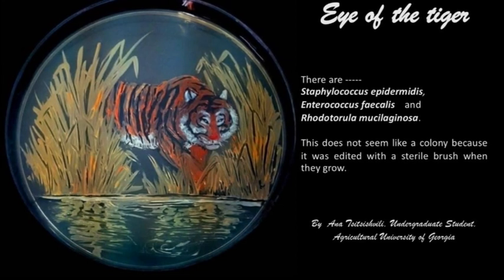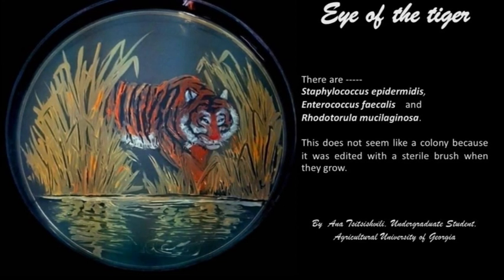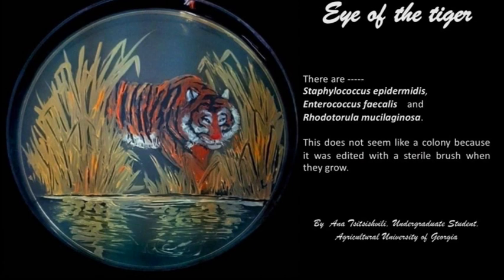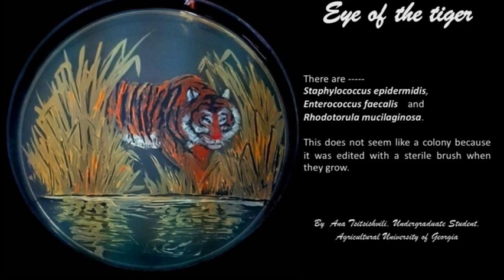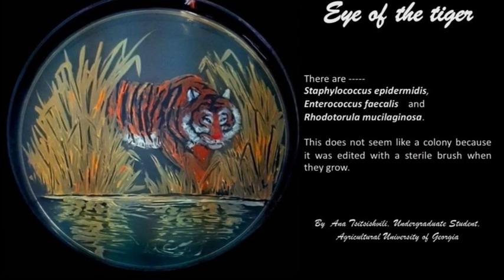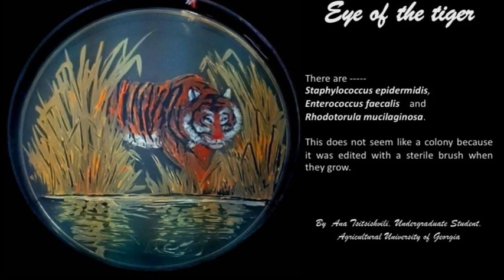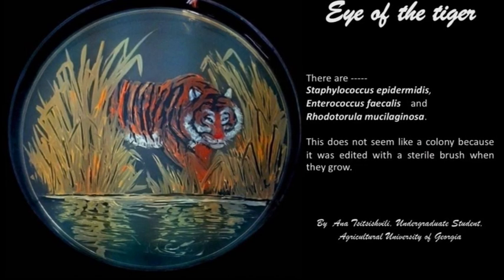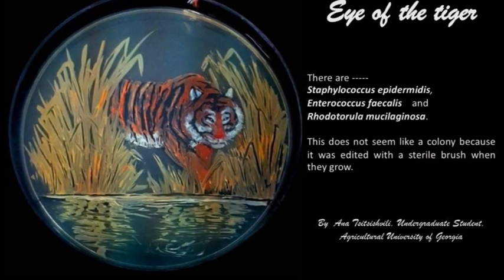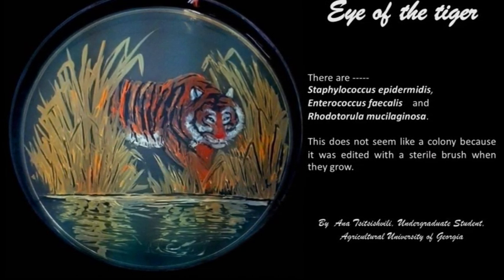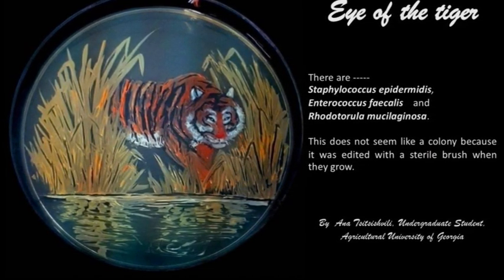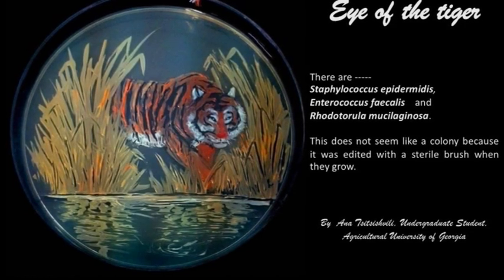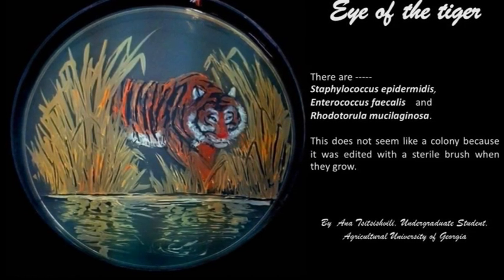I Was a Tiger. In this painting, Staphylococcus epidermidis, Enterococcus faecalis and Rhodotorula are mixed. This does not seem like a colony as it was painted with a striped brush when they grow.